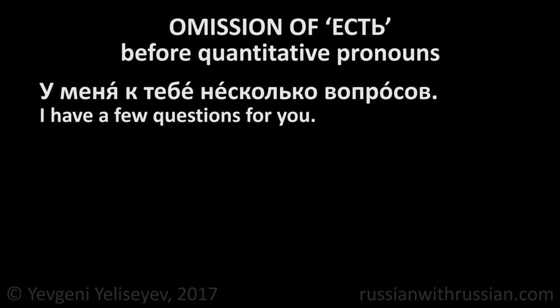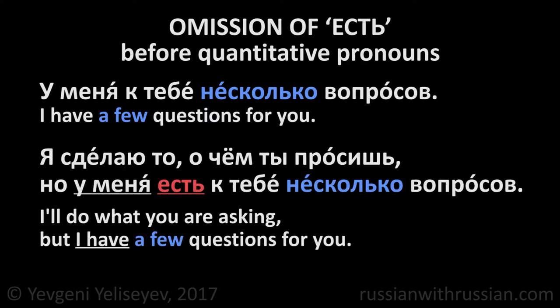У меня к тебе несколько вопросов — I have a few questions for you. Before the word несколько (a few), the word есть is omitted. But: я сделаю то, о чем ты просишь, но у меня есть к тебе несколько вопросов — I'll do what you are asking, but I have a few questions for you. I have questions — that's why I need answers before I can get to work.